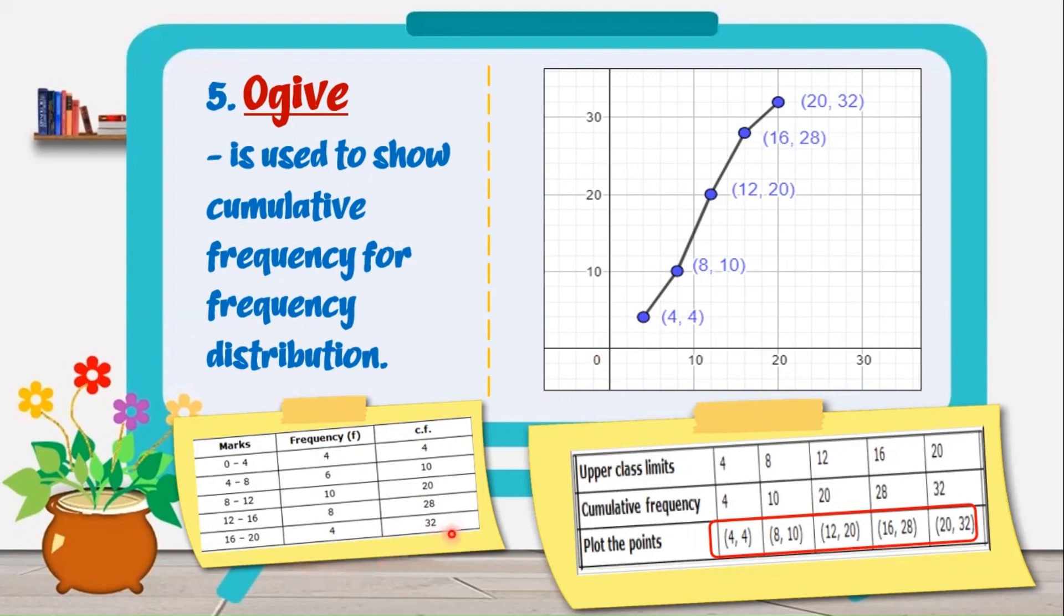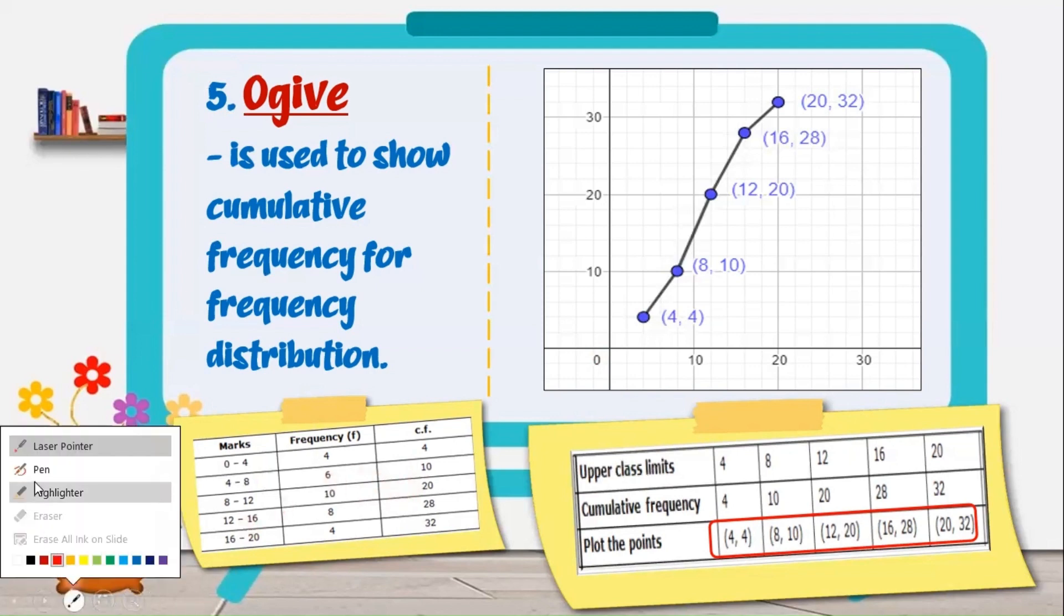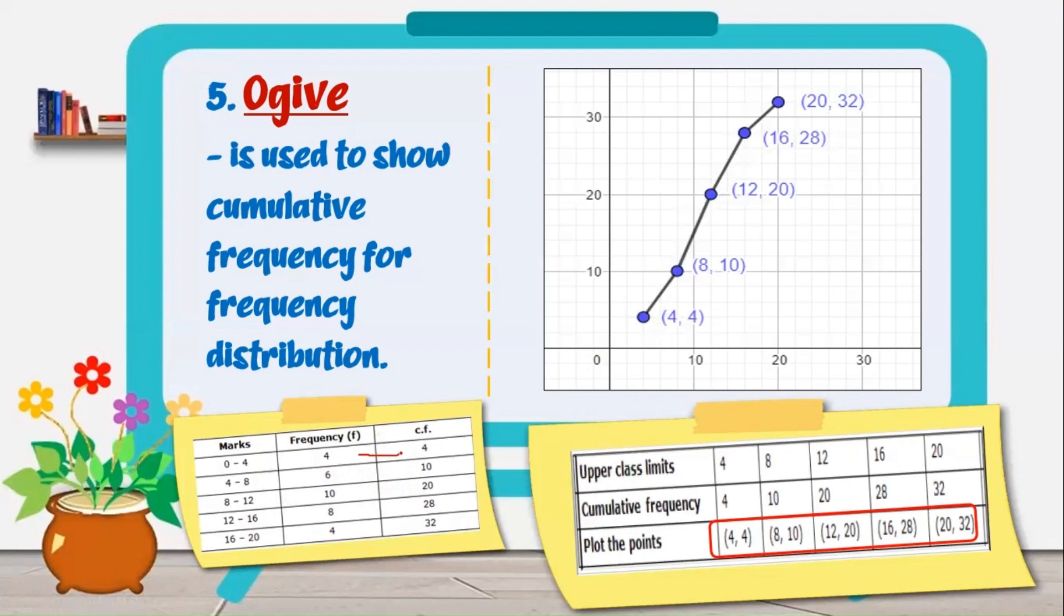In the cumulative frequency column, we have here 4 in the frequency, so we only have to copy that one reflected in the cumulative frequency. Add the second frequency, and then you also have the second cumulative frequency. You have to add the third frequency, then you also get the third cumulative frequency. You do that until you finish up to the last frequency. So it looks like a zigzag.